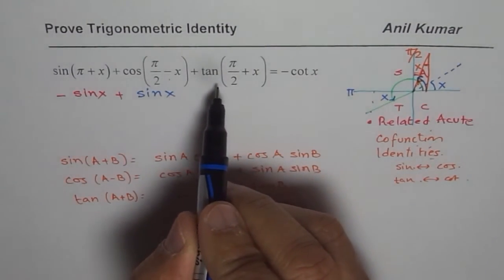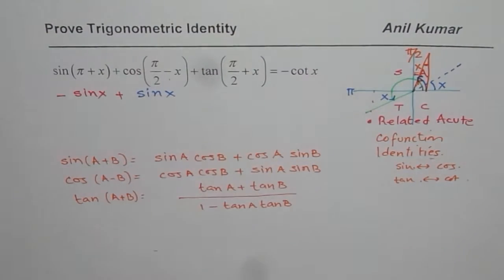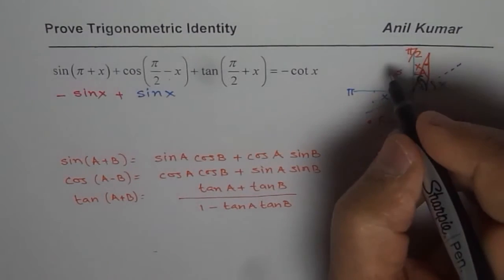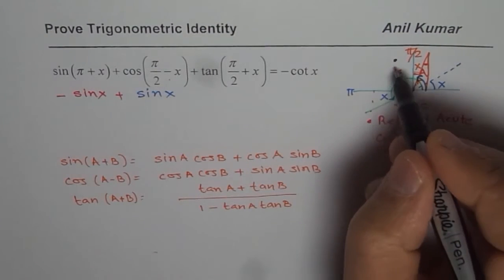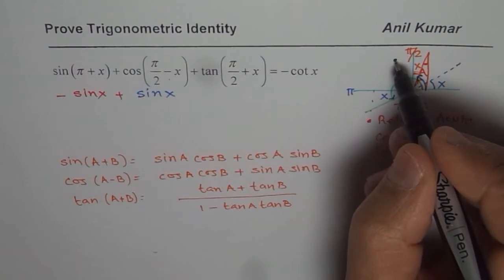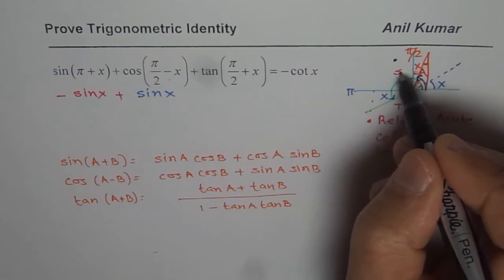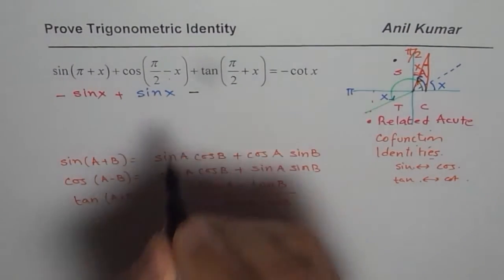Now, let us look into co-function identity for tan pi by 2 plus x. Tan pi by 2 plus x means you are actually in this quadrant. In this quadrant, tan is negative. You can apply the cos rule. Tan is negative. So, we get a negative answer.